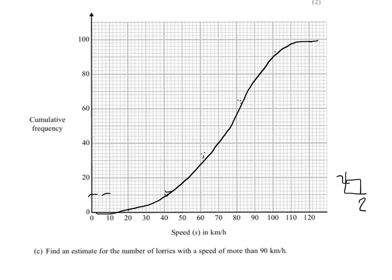We now have to find an estimate for the number of lorries with a speed of more than 90 kilometres. So we go to 90 kilometres, come up, and then come across. We come across, then we've got this coming across 2, just slightly dipped there. Let's say it's 3 below the line. So 3 2s below 80 would give me 6. 6 below 80 is 74.